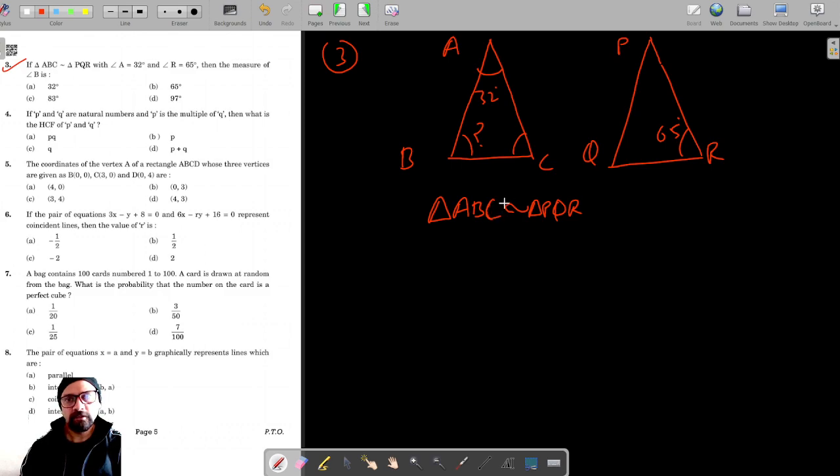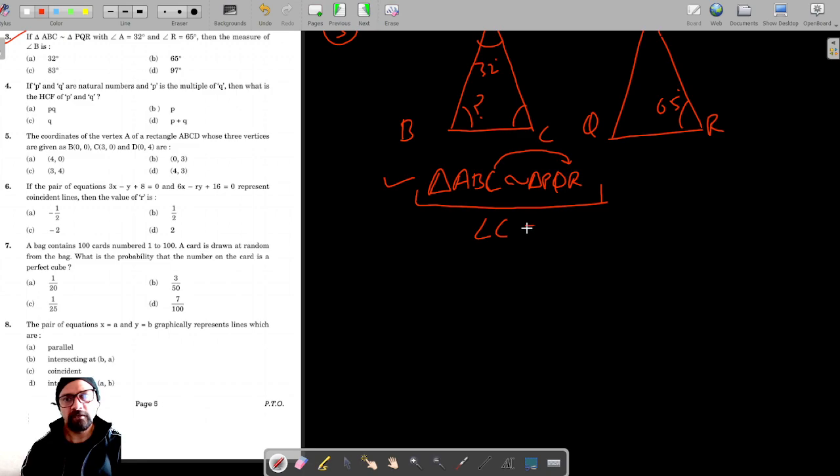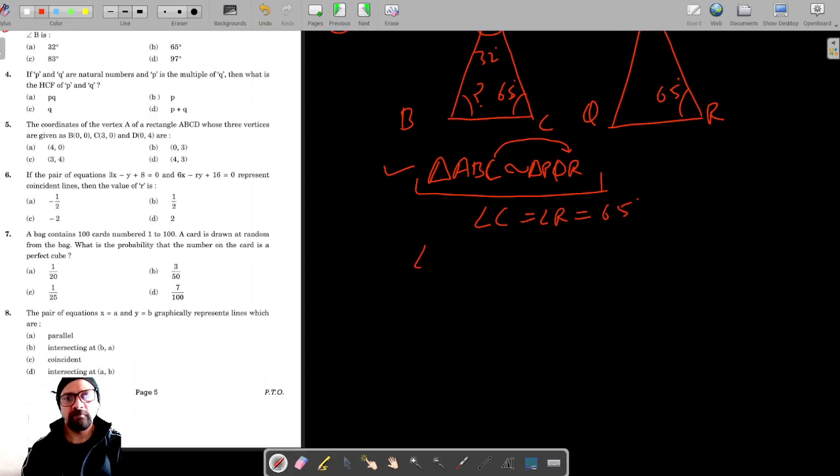The corresponding angles of similar triangles are equal. So if you look at the symbolic form, angle C is equal to angle R. So angle C equals angle R equals 65 degrees. So angle C is 65 degrees, and now we have to find angle B.